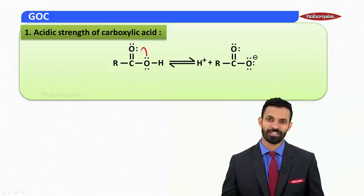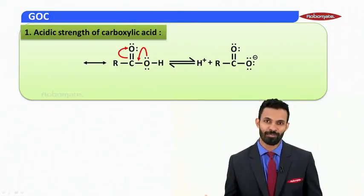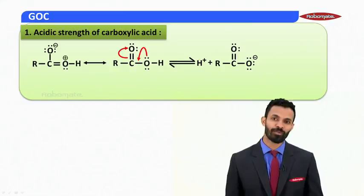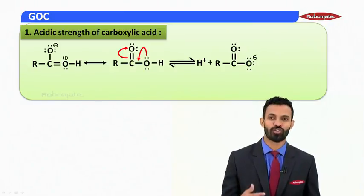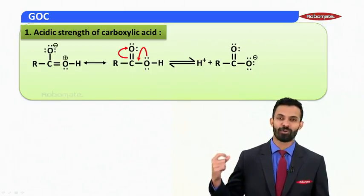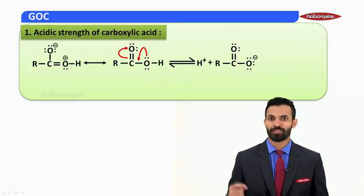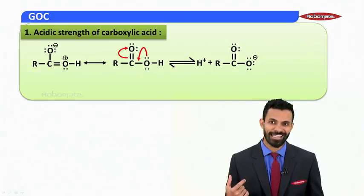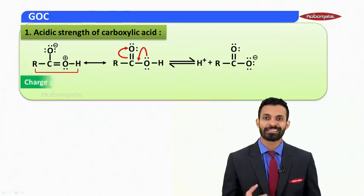Looking at the carboxylic acid structure on the left, if we show delocalization we get a resonating structure. The lone pair from the oxygen atom has delocalized, so it experiences loss of a lone pair and carries a positive charge, while the doubly bonded oxygen gains an additional electron pair and carries a negative charge.